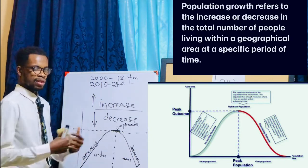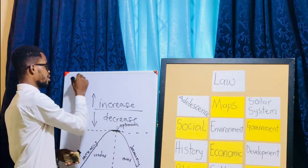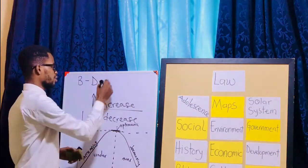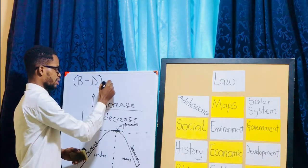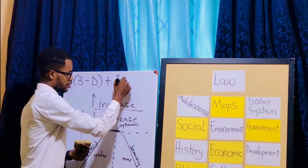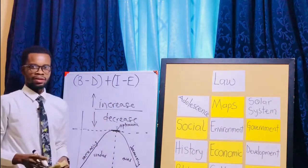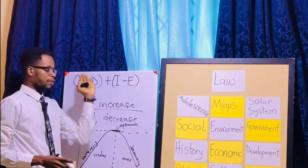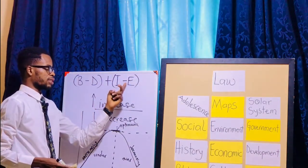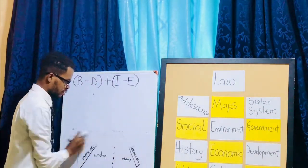To calculate population growth, experts take the total number of births — the birth rate — and subtract the total number of deaths. Then they add the total number of people who have come into the country — immigrants — and subtract those who have left the country — emigrants. This gives you the total population change: births minus deaths, plus immigration, minus emigration.